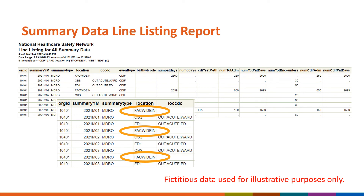Moving on to the summary data line listing report, this report shows all denominator data entered on the summary form for each month of the quarter. Since denominator data is reported at the FACTWIDE-IN level, we do see FACTWIDE-IN under the location column in this report. For the quarter, there are three FACTWIDE-IN lines of denominator data circled on the screen — one for each month. We can also see additional lines of data for the OBS and ED locations for each month, which makes sense since those units have separate summary forms.